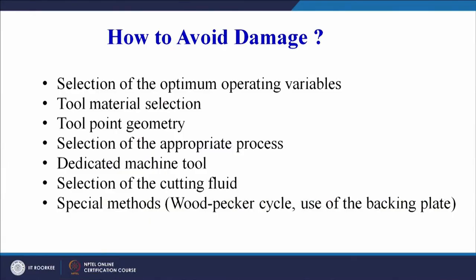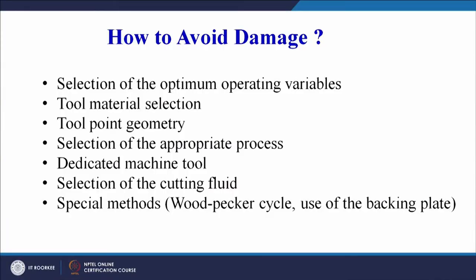We have seen that the machines used for making holes in metals may not be applicable for making holes in composites, so we have to design and develop dedicated machine tools specific to composite materials. We also need to intelligently select the cutting fluid, which may act as a coolant or lubricant. Finally, innovation and improvisation in machining processes — such as the woodpecker cycle and the use of a backing-up plate — are techniques we are going to cover today.